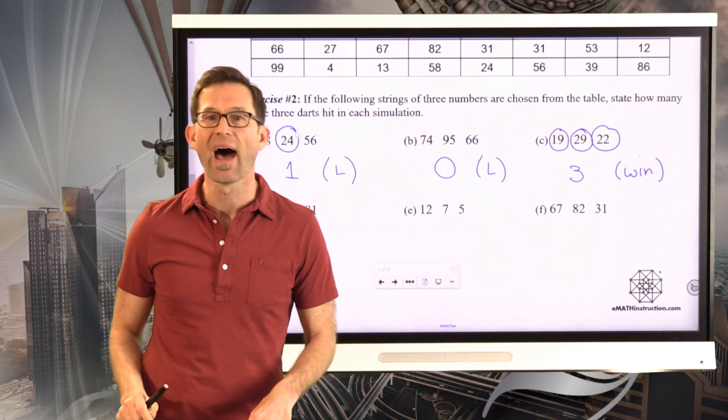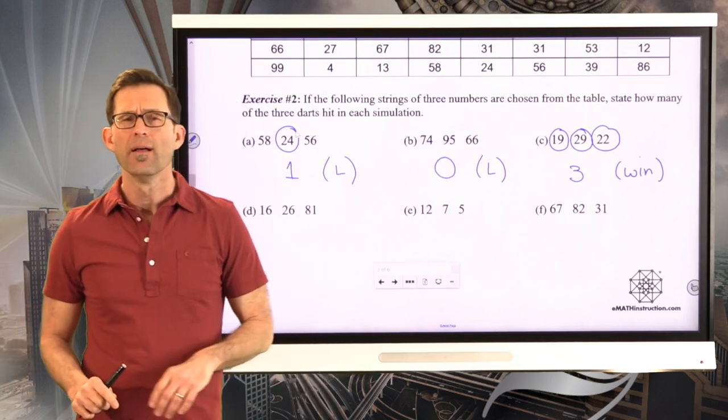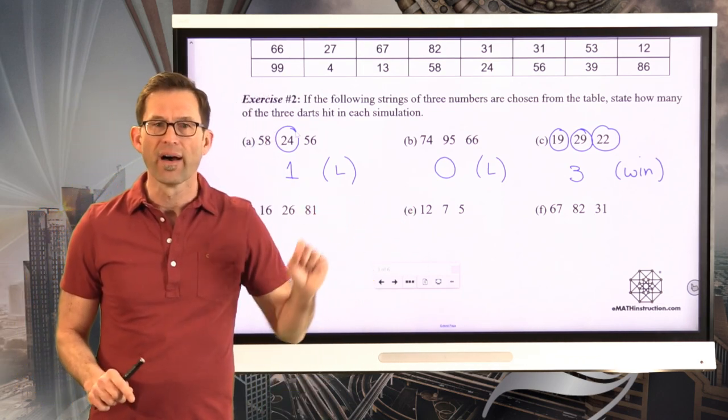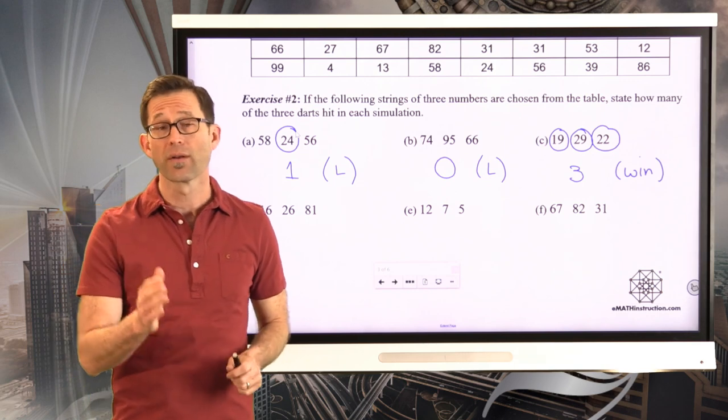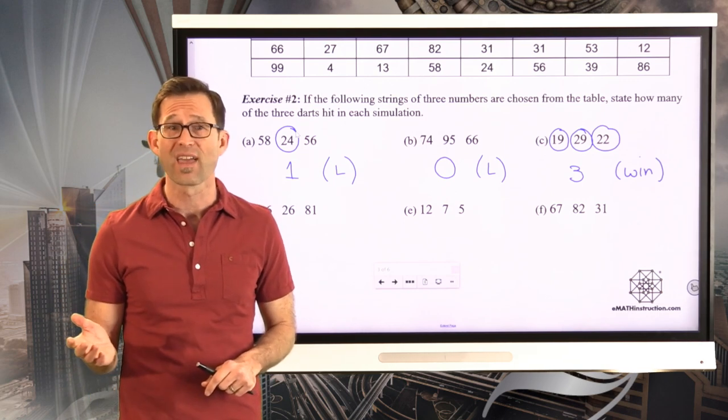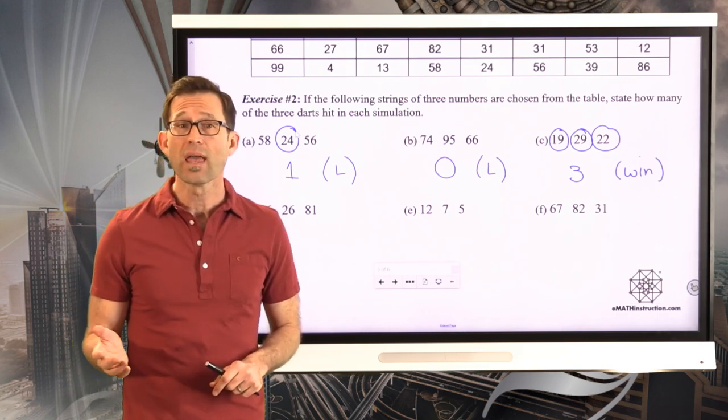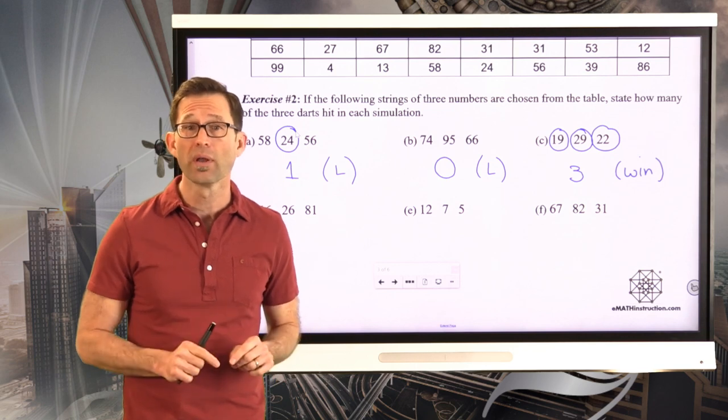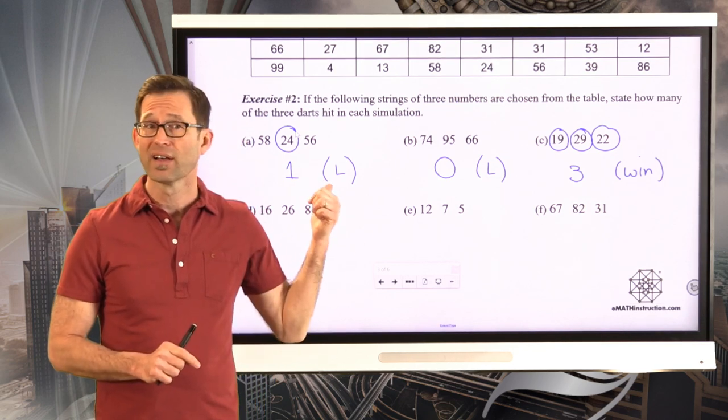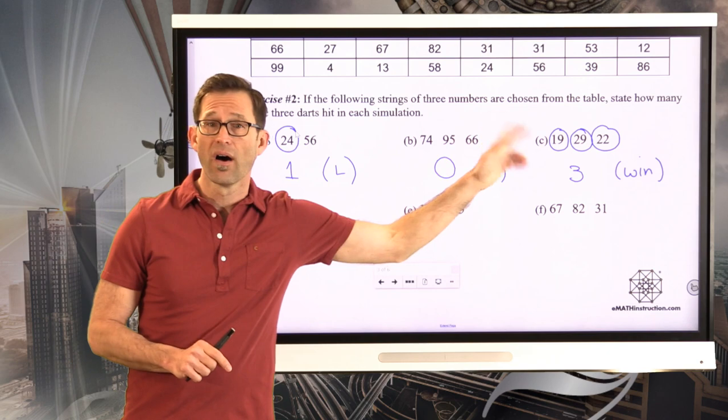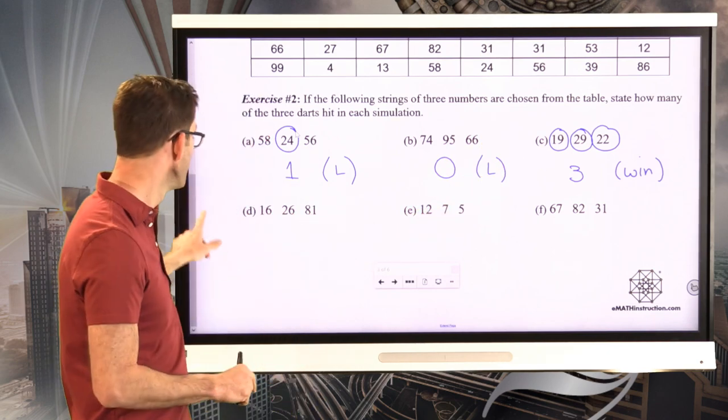This would represent a loss, this would represent a loss. I know that this problem doesn't actually ask us to make that judgment, but it's good to just realize, because at the end of the day, I'm really trying to figure out what's the probability I'm going to win this game. And I'm going to win this game if I get two darts in or three darts in. So if I get one in, that's a loss. Zero in, that's a loss. Three in, that's a win.